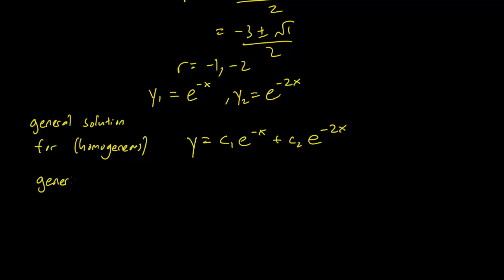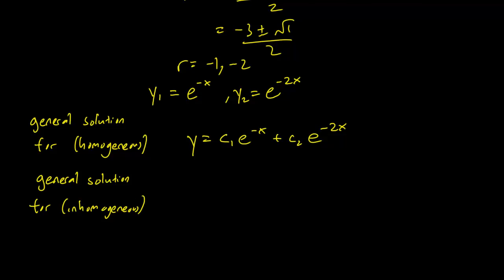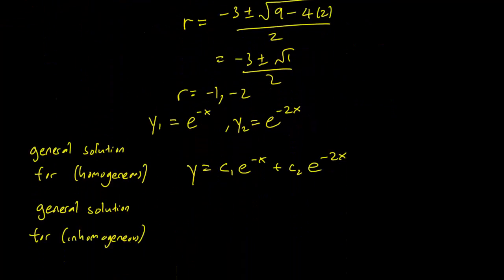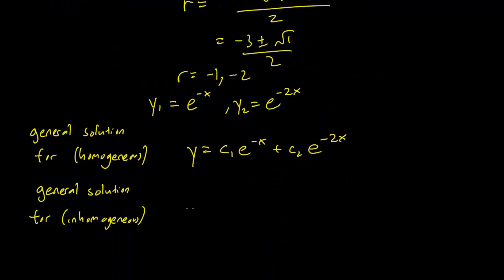The general solution for the inhomogeneous equation: we're just going to take the particular solution here and add it to what we already have. So this 2x is going to be 2x plus what we had before. And this is indeed the general solution for our inhomogeneous equation. That covers all the solutions we can possibly get for it.